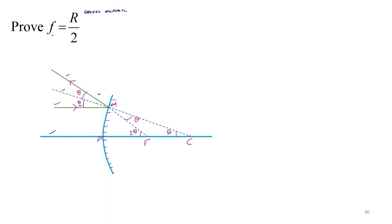So M is of course point of incidence. And if this is theta and this is theta, this angle will be 2 theta. Because it is exterior angle to the triangle MFC. So this angle plus this angle will give you this angle. So 2 theta.